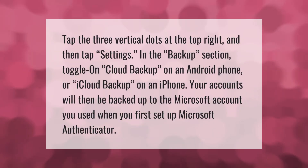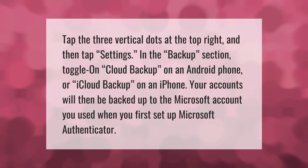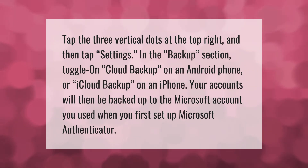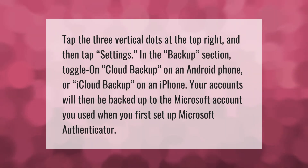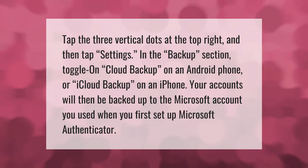Tap the three vertical dots at the top right and then tap Settings. In the backup section, toggle on Cloud Backup on an Android phone or iCloud Backup on an iPhone. Your accounts will then be backed up to the Microsoft account you used when you first set up Microsoft Authenticator.